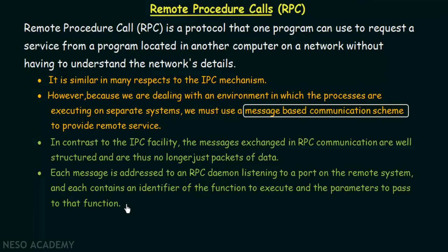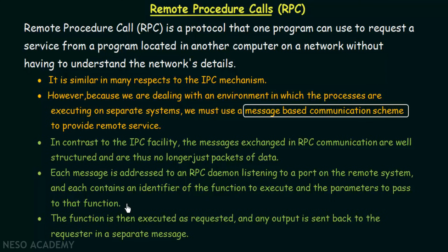In RPC, we use the term 'function' to describe the service being requested. A function is a piece of code that performs a specific task and requires parameters. In RPC, think of the remote function as a service: one process requests a service provided by another process in another system. We pass the function identifier and its parameters, the function is then executed as requested, and any output is sent back to the requester in a separate message.